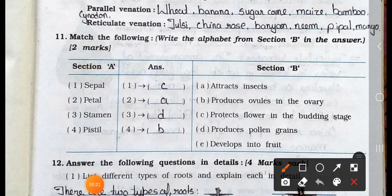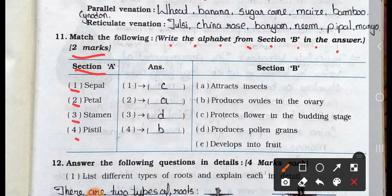Match the following. Write the alphabet from section B in the answer, it's two marks. Now see section A first of all. Number 1, sepal. Number 2, petal. Number 3, stamen. And number 4, pistil. Now see section B. A. Attracts insects. B. Produces ovules in the ovaries. C. Protects flower in the budding stage. D. Produces pollen grains. And E. Develops into fruit.